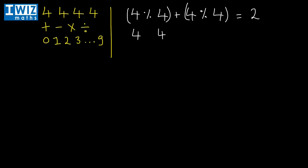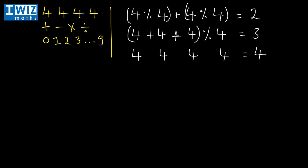To get to three using four fours: four plus four plus four is 12, and dividing that by four gives three. To get to four: four plus four minus four, so four minus four is zero, multiply that by four and you still get zero, then four plus zero is four.